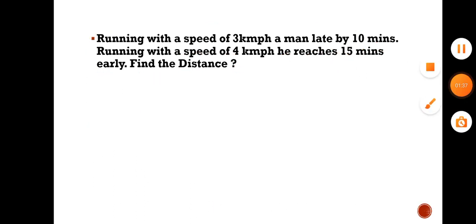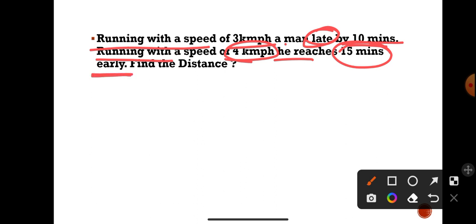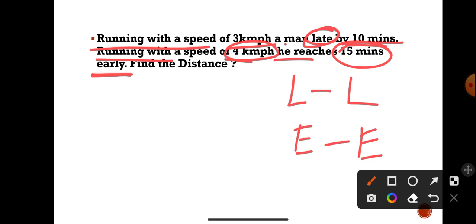Let's see how to solve these types of questions. Running with a speed of 3 kilometers per hour, a man is late by 10 minutes, and running with a speed of 4 kilometers per hour, he reaches 15 minutes early. Before solving, note this rule: if both scenarios are late, subtract the times; if both are early, subtract again; but if one is late and one is early, add the times.